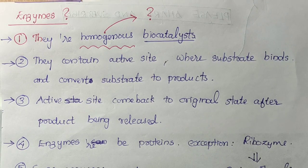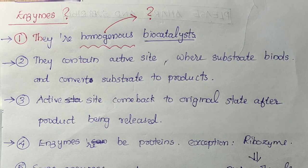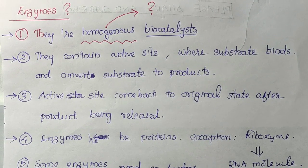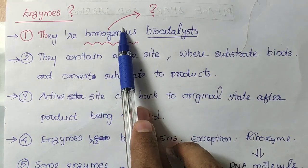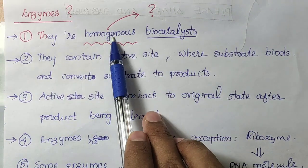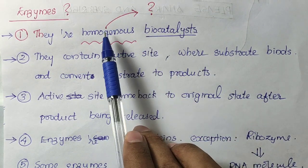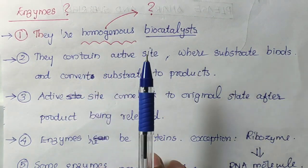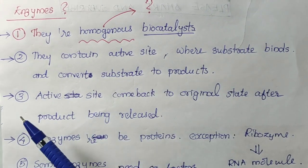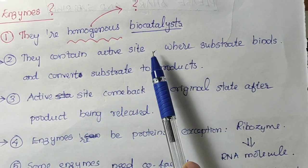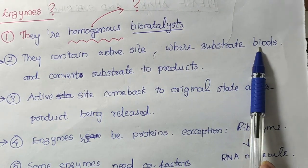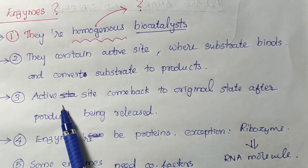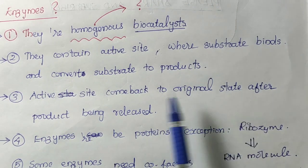Before going to derivation, let me first introduce to you what enzymes are. Enzymes are biocatalysts — homogeneous biocatalysts. Homogeneous means the reactant and the catalyst are in the same phase. For example, if the reactant is in solid state then the catalyst will also be in solid state. The enzyme contains an active site where the substrate binds and converts the substrate to product. The active site comes back to its original state after the product is released.